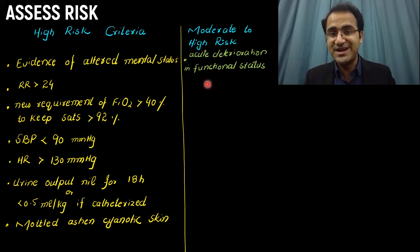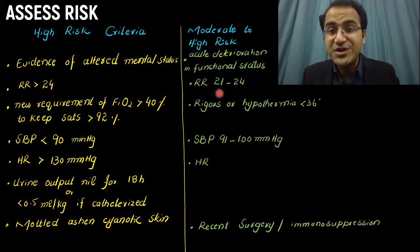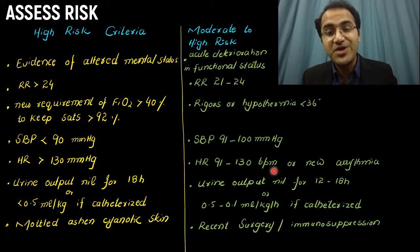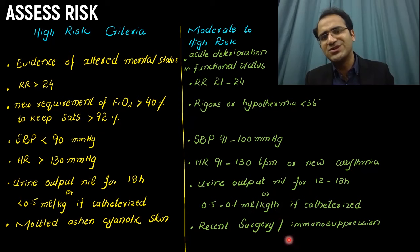Moderate-to-high risk criteria include: deterioration in functional status rather than full altered mental status — perhaps a patient who was walking around but is now bedbound; respiratory rate of 21 to 24 (compared to greater than 24 in high risk); rigors and hypothermia due to poor perfusion; systolic blood pressure 91 to 100 mmHg (compare to less than 90 in high risk); heart rate 91 to 130 or any arrhythmia; urine output nil for 12 to 18 hours or 0.5 to 1 ml per kg per hour if catheterized; and recent surgery or immunosuppression.